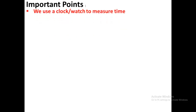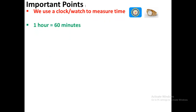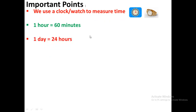We use a clock or a watch to measure time. One hour is equal to 60 minutes — that means there are 60 minutes in one hour. One day is equal to 24 hours; there are 24 hours in a day.